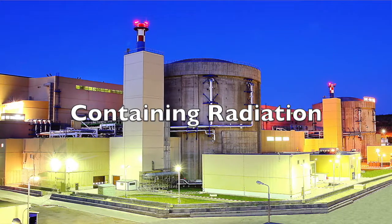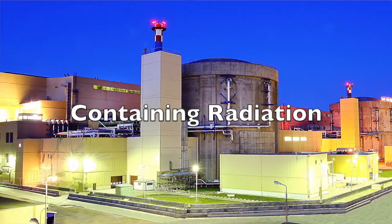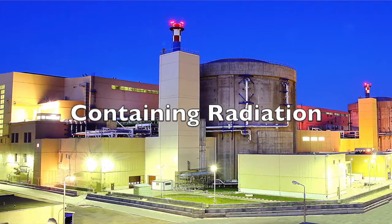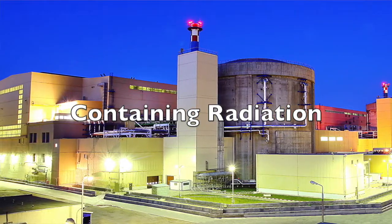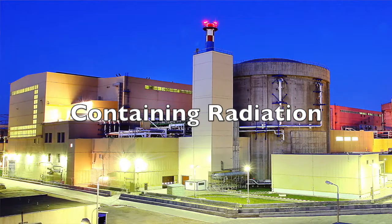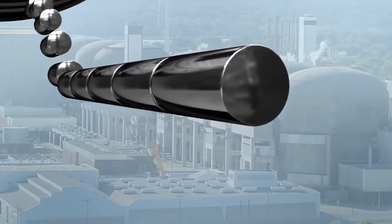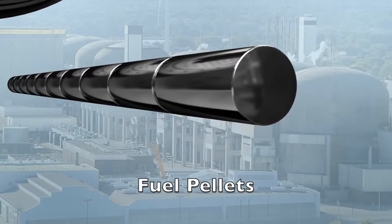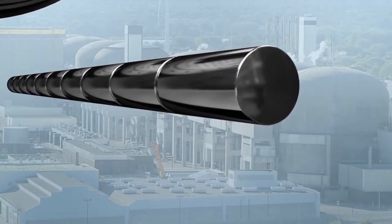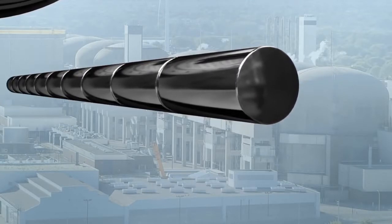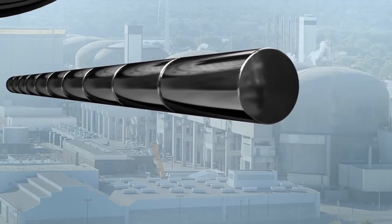Let's look at the third basic function, containing radiation. Nuclear reactors are built with multiple barriers to safely contain radiation. At the heart of all CANDU reactors are hardened ceramic pellets made of natural uranium. These pellets contain the radiation and form the first layer of containment.